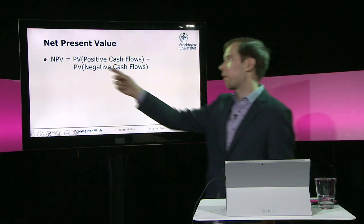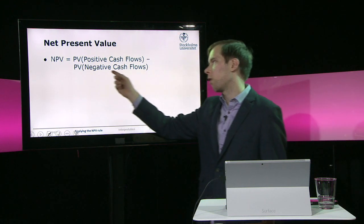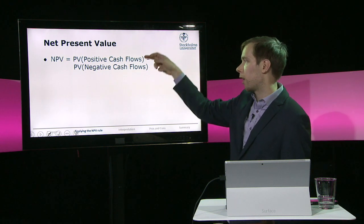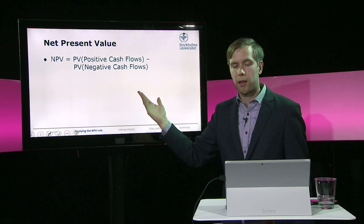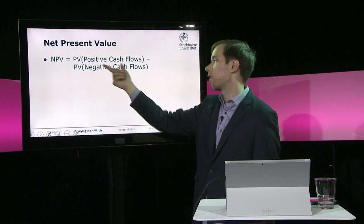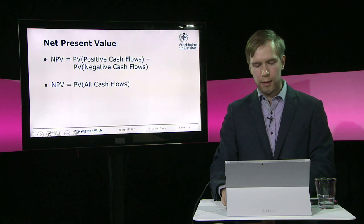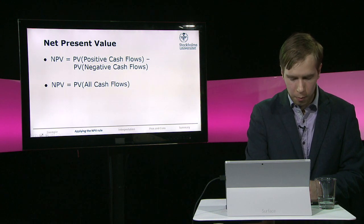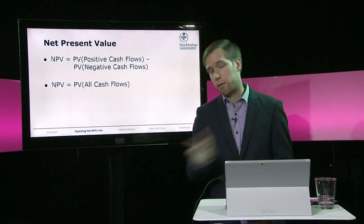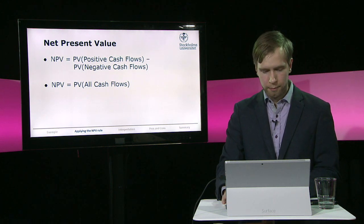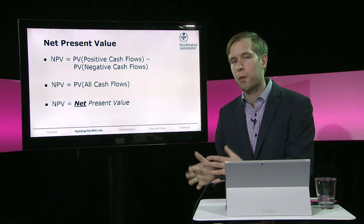In general, you compute the present value of all positive cash flows and sum them up. You also take the present value of all negative cash flows and sum them up. In the last example, we had five positive cash flows which we summed, but only one negative cash flow of 300. The net present value is the difference between the present value of the positive ones and the present value of the negative cash flows. Alternatively, you can simply take the present value of all cash flows — positive or negative — and add them together. It would be the same thing.